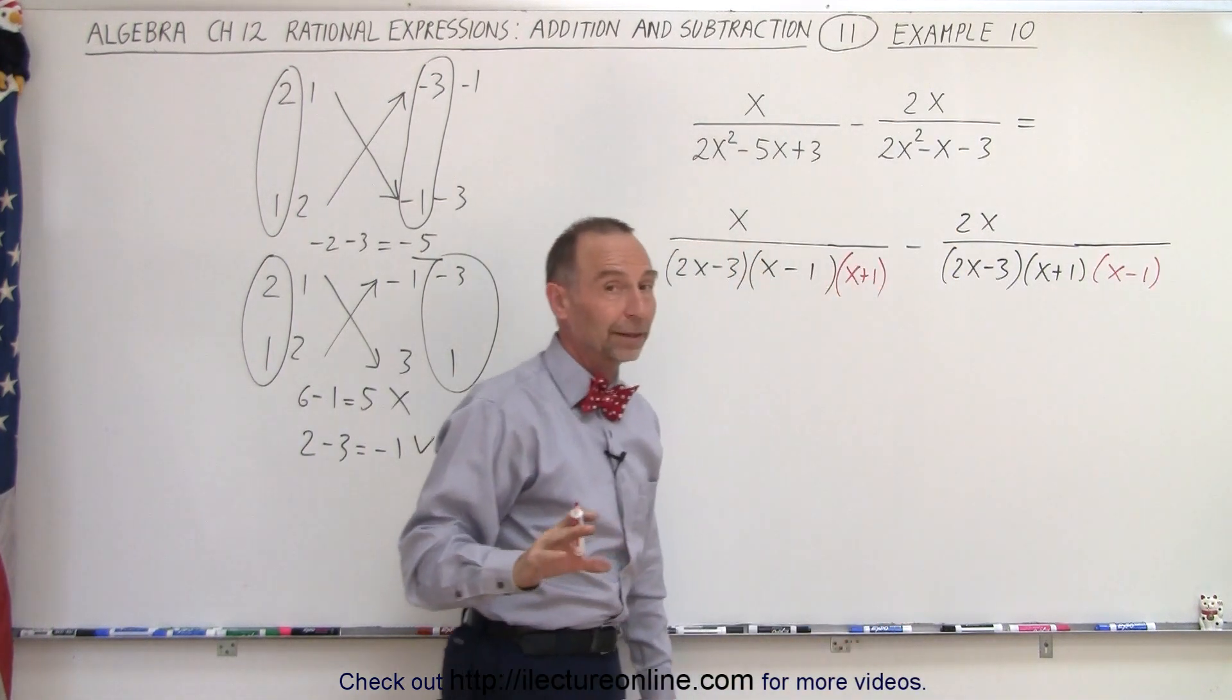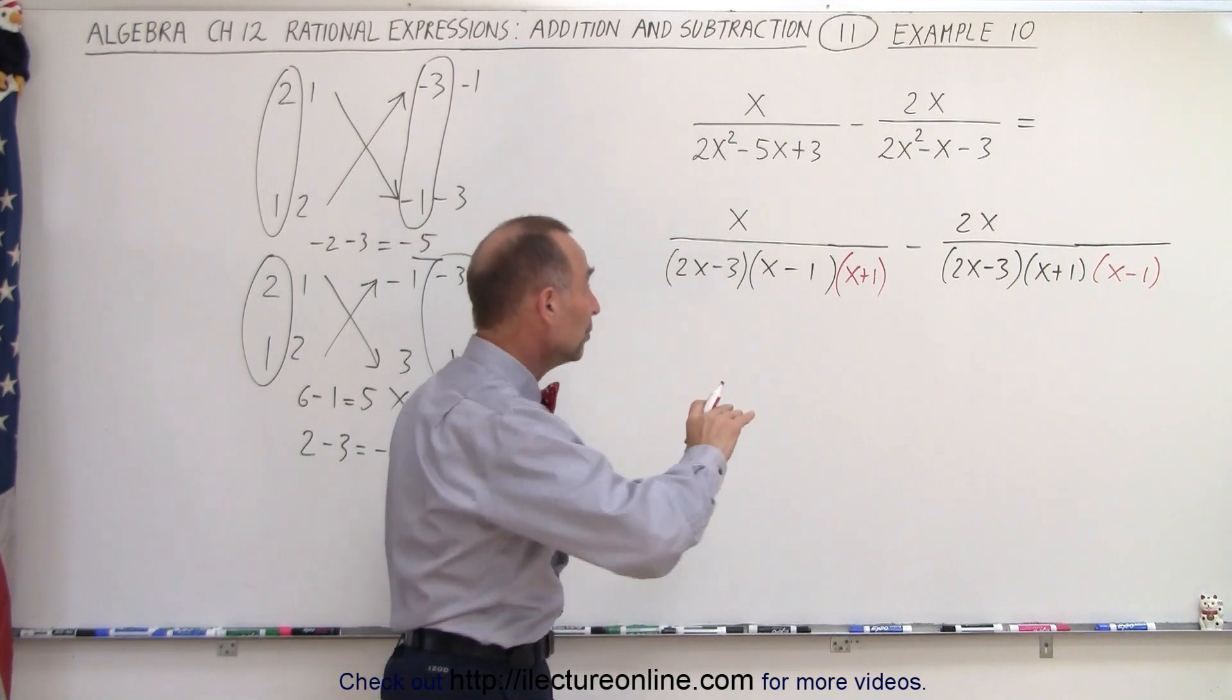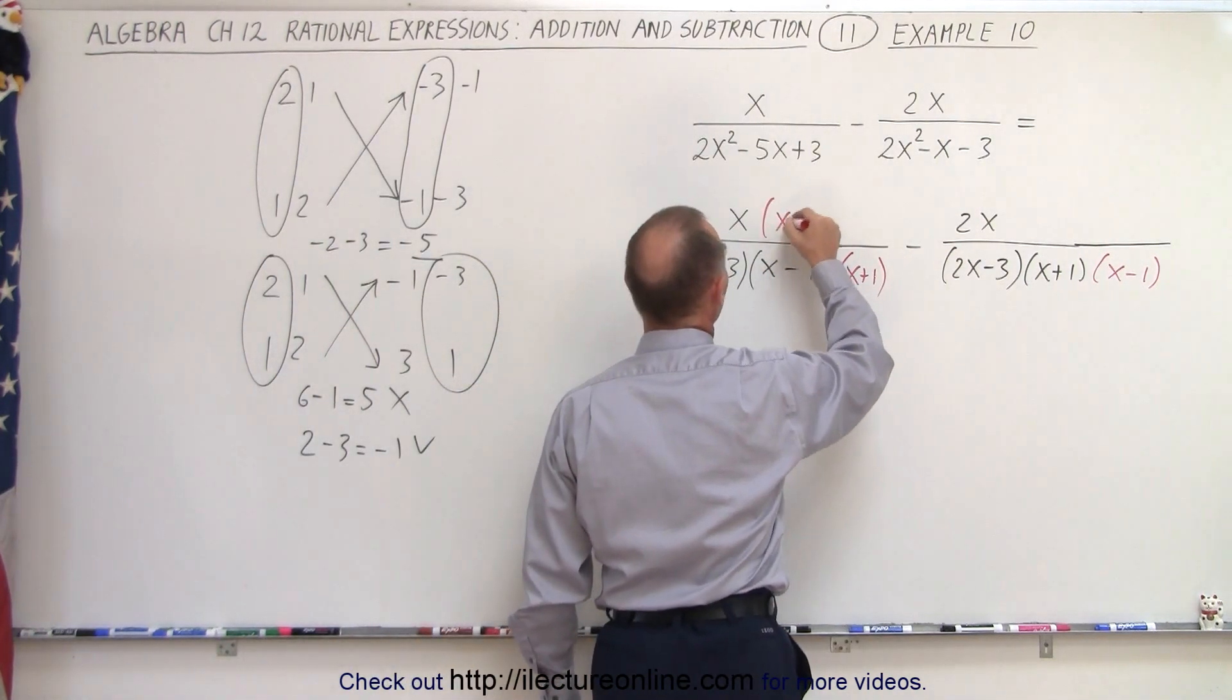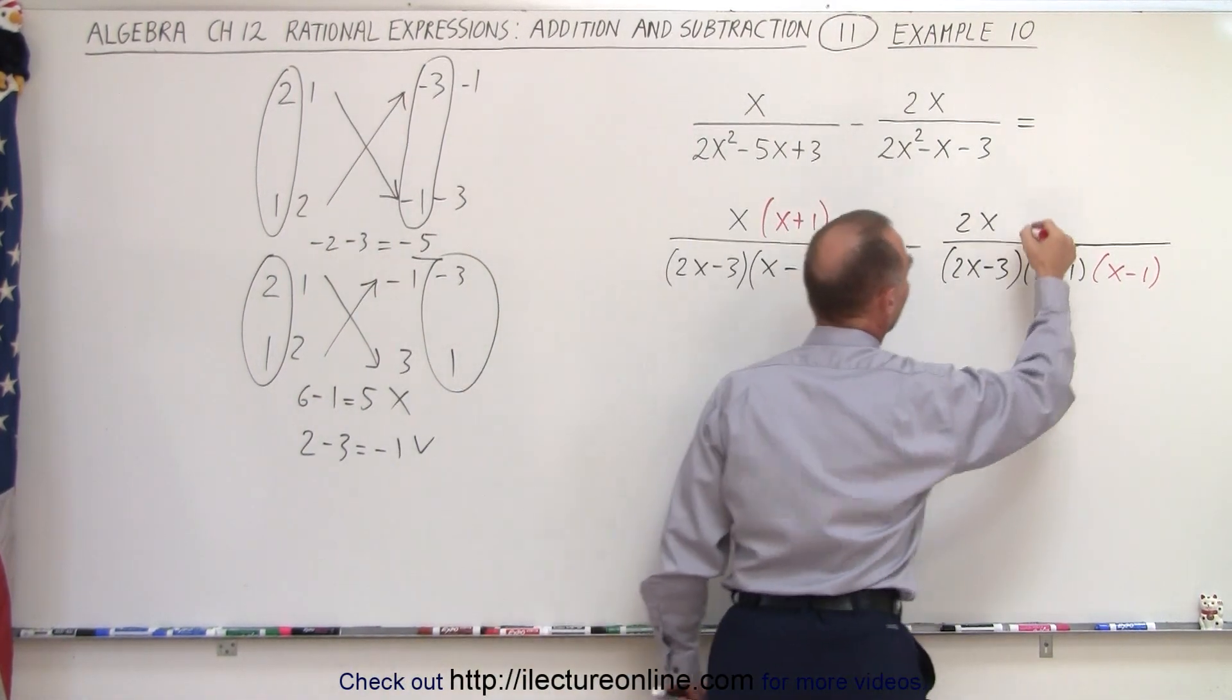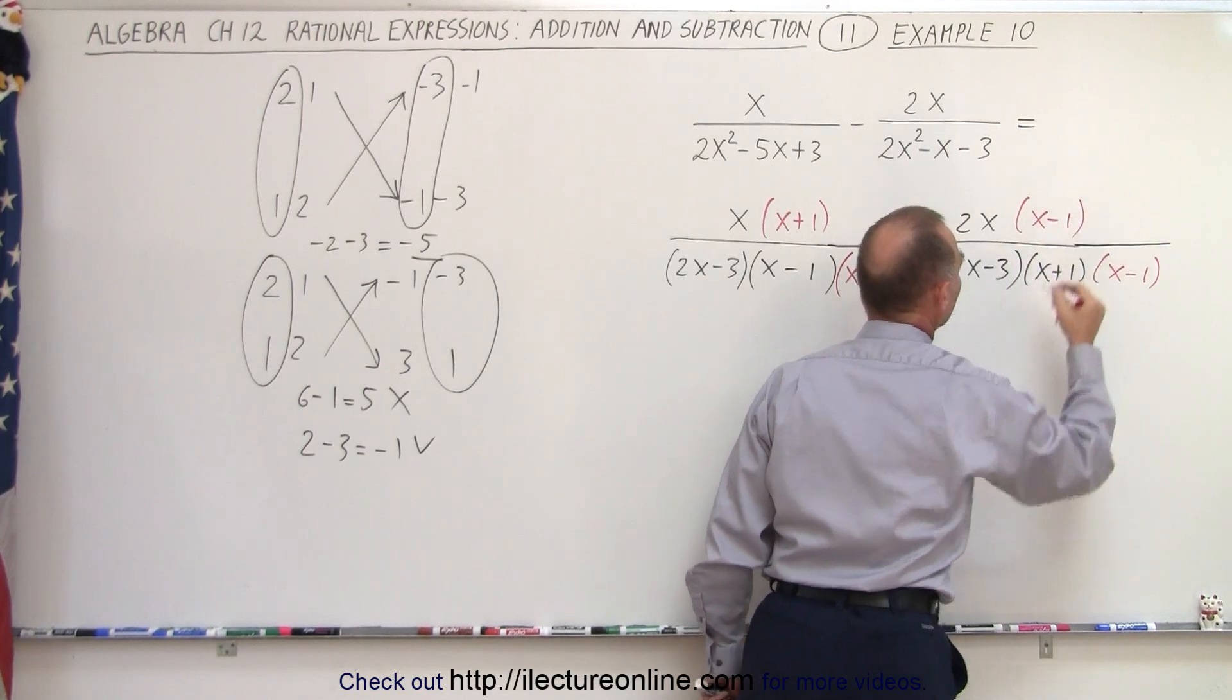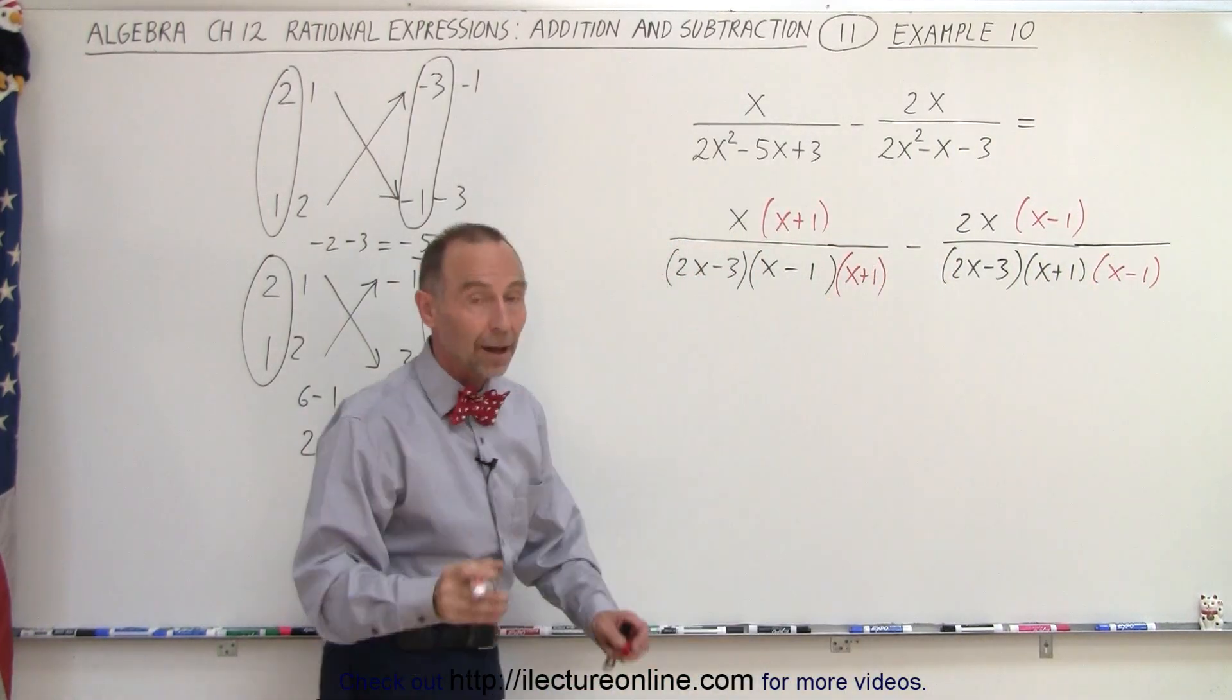When we multiply the denominators, we have to multiply the numerators with the exact same amount: x plus 1 and x minus 1. And so now you can see that we have a common denominator.